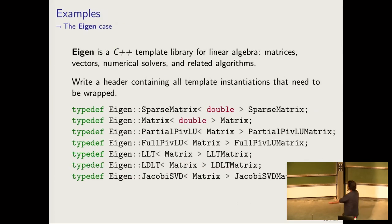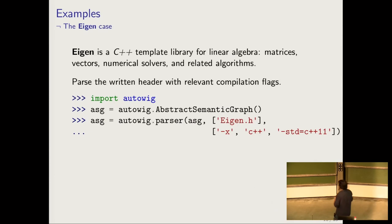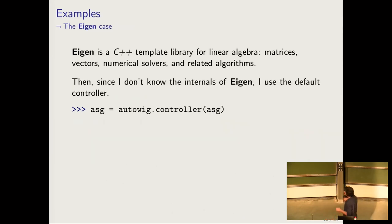I will take the example of Eigen, because it's a pure template library that is really frequent in C++. The first thing you need to do is to write a C++ header when you use typedefs to define which of the template instantiations you want to have in your Python library. Then you just need to create an abstract semantic graph which is empty at the beginning, and use the parser with giving the header to parse and the compilation flags.